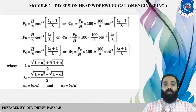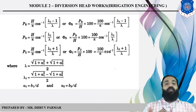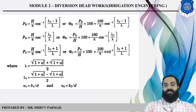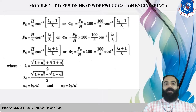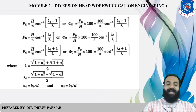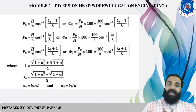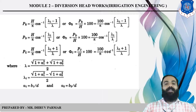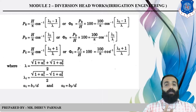The formula directly given by Khosla is: PE = (H/π) × cos⁻¹[(λ₁ − 1)/λ₁]. And φE = PE/H = (100/π) × cos⁻¹[(λ₁ − 1)/λ₁]. Similarly, PD = (H/π) × cos⁻¹[λ₁/λ₁], and PC = (H/π) × cos⁻¹[(λ₁ + 1)/λ₁]. The basic difference is: for PE use (λ₁ − 1), for PD use λ₁, and for PC use (λ₁ + 1).